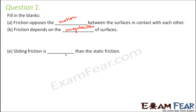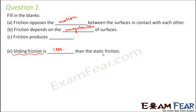Sliding friction is dash than static friction. Sliding friction occurs when the body is moving, so at that time it doesn't get enough time for proper interlocking — interlocking is less, therefore friction is less. Whereas in static friction there is more interlocking, therefore more friction.